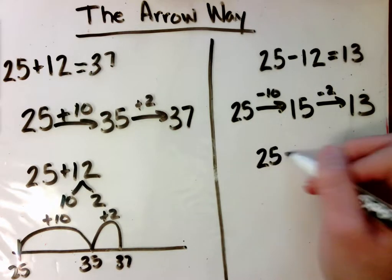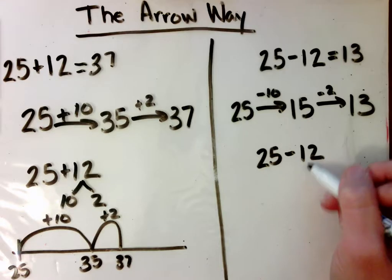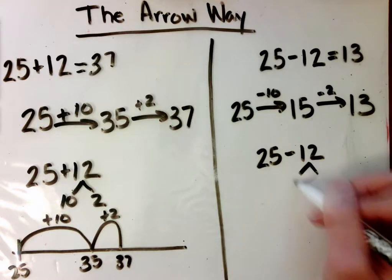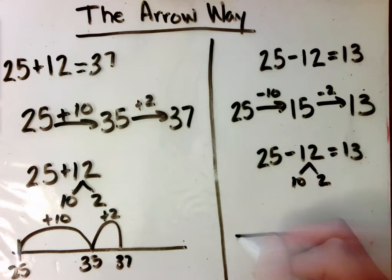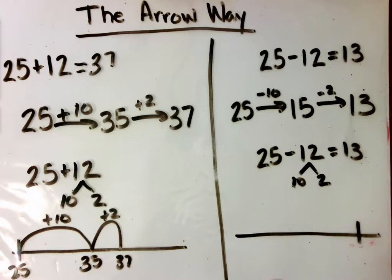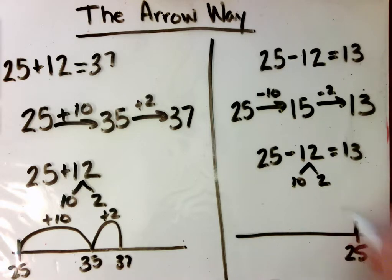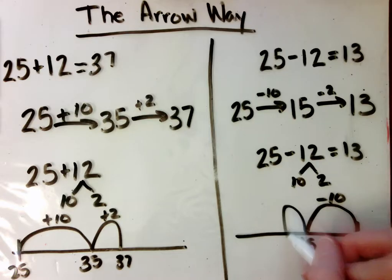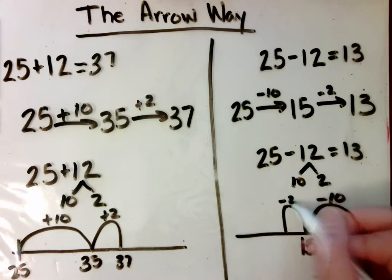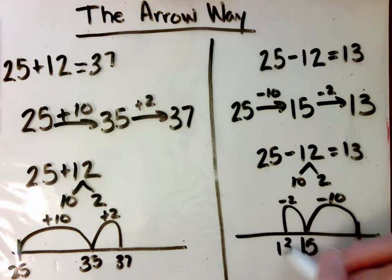We could be using number bonds to take away 10 and then take away 2. Or we could be using a number line, starting at 25, taking away 10 to get to 15, and taking away 2 to get to 13.